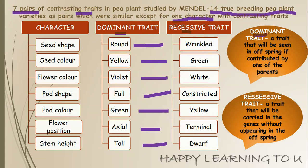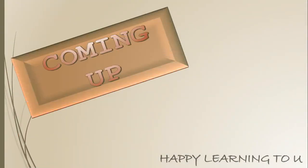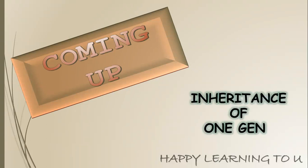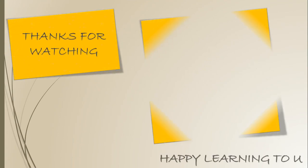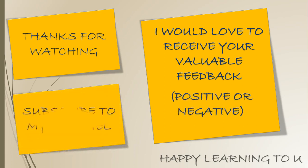This is all I have under Mendel's law of inheritance. Today I have explained the basics of the hybridization experiment and what he used — he conducted hybridization experiments on garden pea plants using seven pairs of contrasting traits, totaling 14 true breeding pea plants. My next video will cover details about the inheritance of one gene, including the experiment, observations, and inferences. Do keep watching for more videos on genetics and the principles of inheritance and variation. Thank you, and I would love to receive your valuable feedback. Please subscribe to my channel.